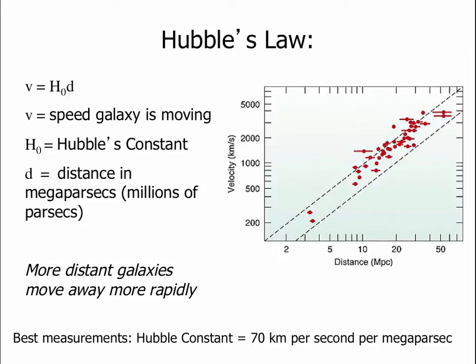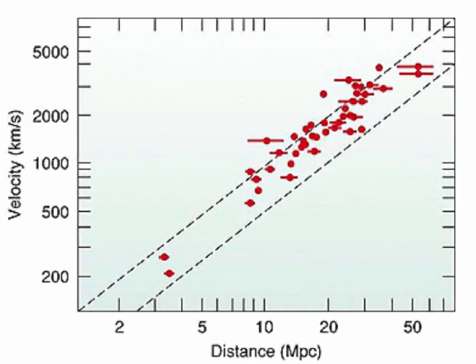Writing an equation for this line, we find that the velocity of a galaxy equals the slope of the line times its distance. We call this slope Hubble's constant, H-naught, giving us Hubble's Law: velocity equals H₀ times distance. The best measurements give H₀ a value of close to 70 kilometers per second per megaparsec. So a galaxy one megaparsec away moves away at 70 km/s; at two megaparsecs, 140 km/s; at ten megaparsecs, 700 km/s — and so on.